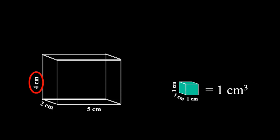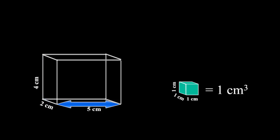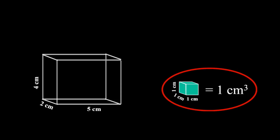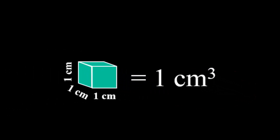For example, here we have four centimeters on one side, two on another, and five centimeters on the third — so height, depth, and width. Over to the right, we can see a cube that has a measurement of one centimeter on each side. Measuring the amount of space occupied by this cube, we have one centimeter as the height, one centimeter as the depth, and one centimeter as the width, giving us one cubic centimeter of space.